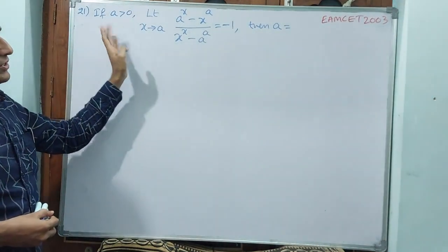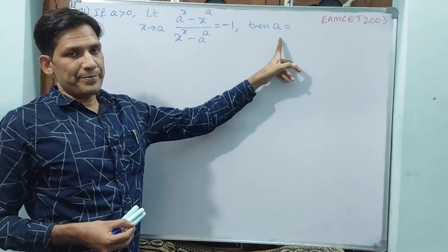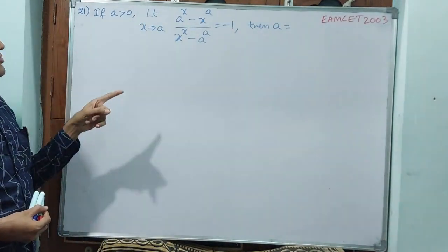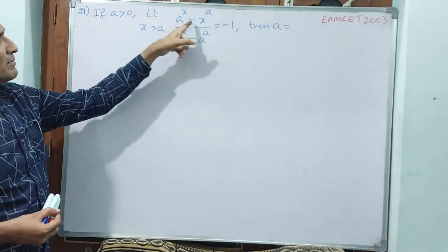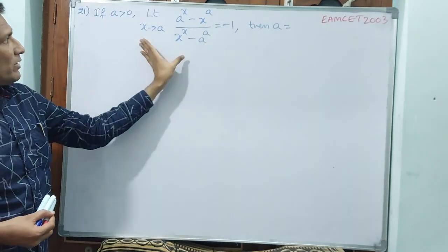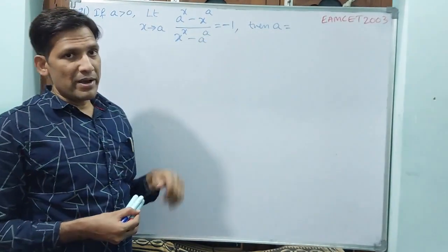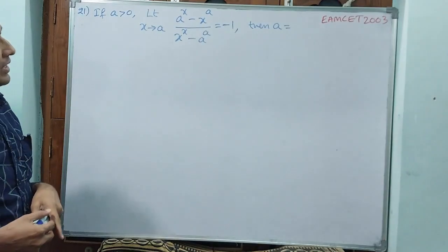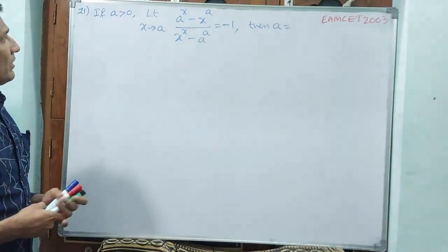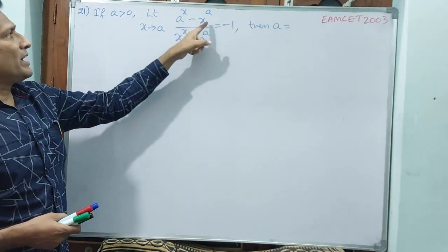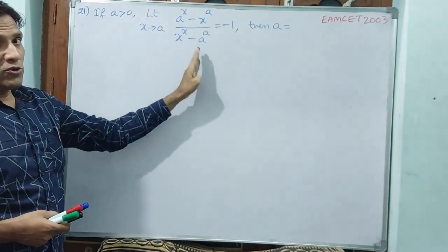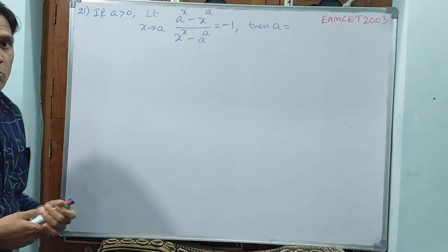If a is greater than 0, limit x tends to a, a power x minus x power a divided by x power x minus a power a is equal to minus 1. We have to find the value of a. If you apply directly, a power a minus a power a gives 0 by 0. That is where you go for L'Hôpital's rule.